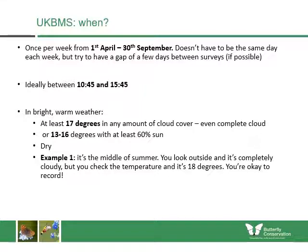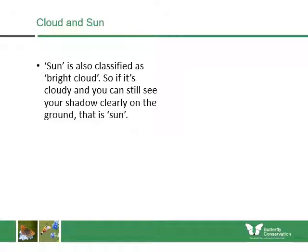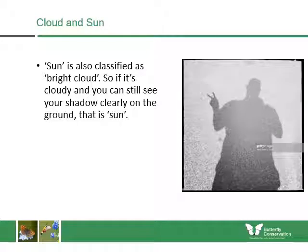For example, in the middle of summer if it's completely cloudy but the temperature is 18 degrees, you're okay to record. In early April it might only be 14 degrees but completely sunny — in that situation you're also able to record. Sun is classified as bright cloud too: if you go outside and can still see your shadow clearly on the ground, that counts as sun, meaning enough of the sun's radiation is getting through to allow butterflies to fly.